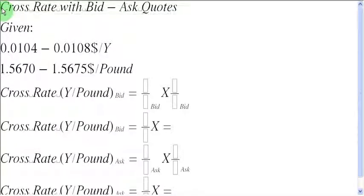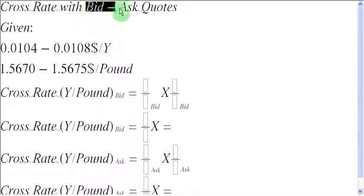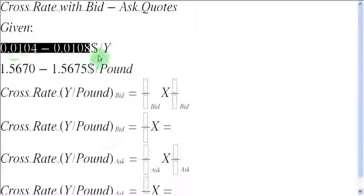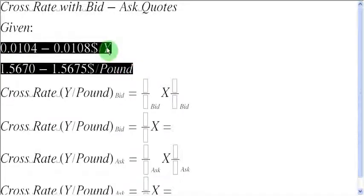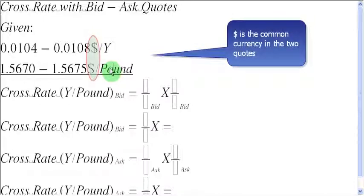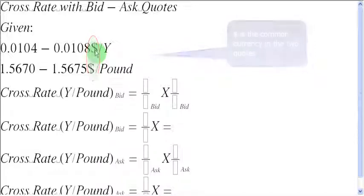Ladies and gentlemen, welcome to this screencast in which we are going to find out the cross rate when we are dealing with bid ask quotations. Cross rate is simply the implied exchange rate between two currencies when both of them are quoted in terms of a common third currency. If you look at these two quotations here, yens are quoted in terms of dollars, and pounds are also quoted in terms of dollars — both quoted in terms of the common third currency, the US dollar.